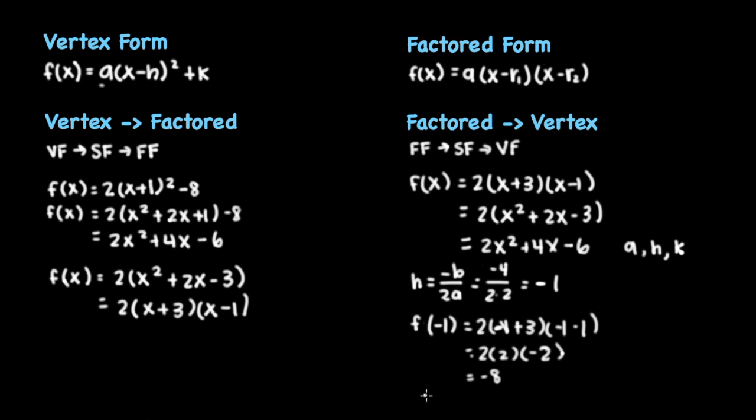So our final vertex form will be f(x) = 2(x + 1)² - 8.